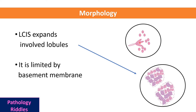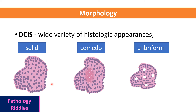In lobular carcinoma in situ, the normal architecture is again distorted; the lobules are increased in size. It is again surrounded by a basement membrane which prevents any tumor cells from coming out, so it is called lobular carcinoma in situ.